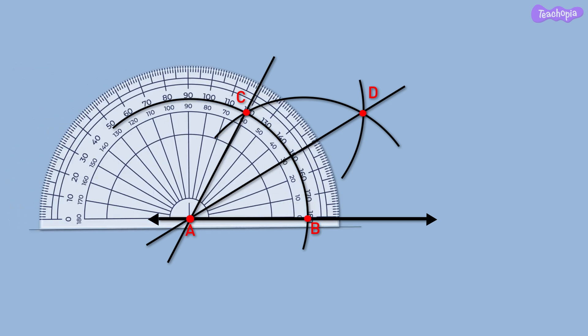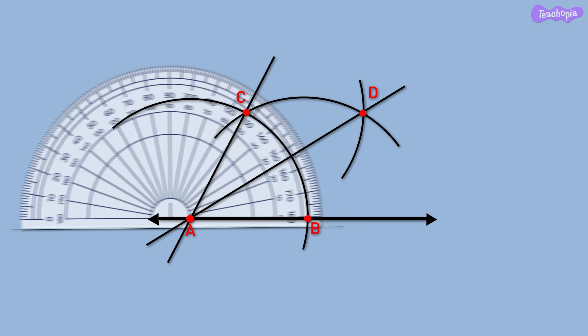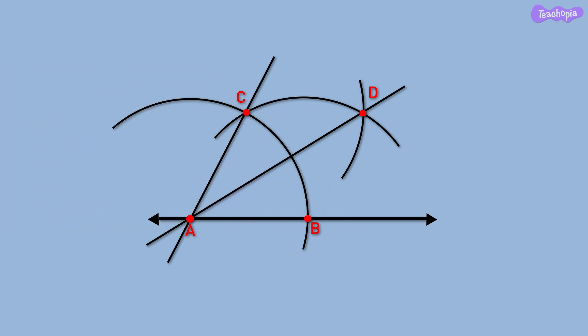Place the center of the protractor at A and align its 0 degree line with AB. The line AD falls on the 30 degree marking of the protractor. In this manner, we can draw a 30 degree angle on any given line. All the arcs in the figure are drawn using the same opening of the compass.